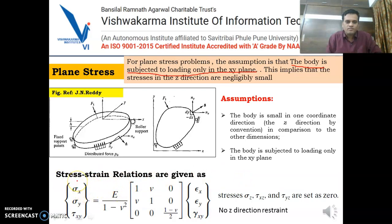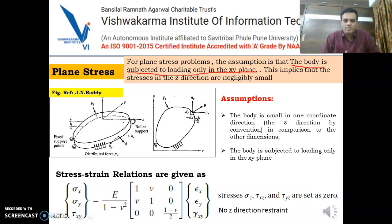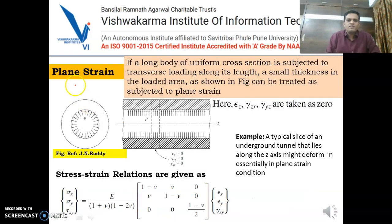Under these assumptions we will get the stress-strain relations. This is the stress matrix, this is the strain matrix, and this matrix is called the material property matrix. A very common example for plane stress is a plate with a hole subjected to loading in the xy plane, with no load in the z direction.